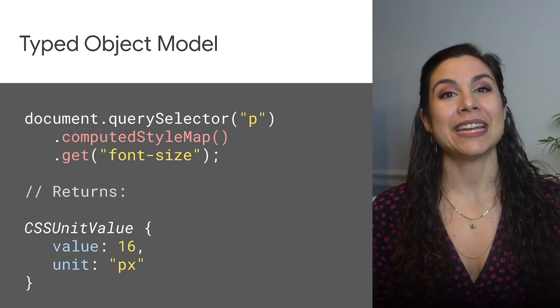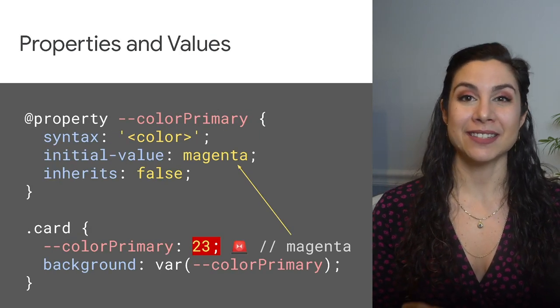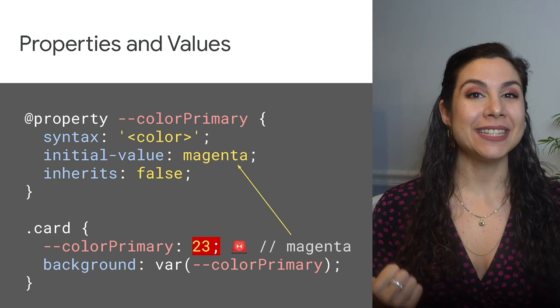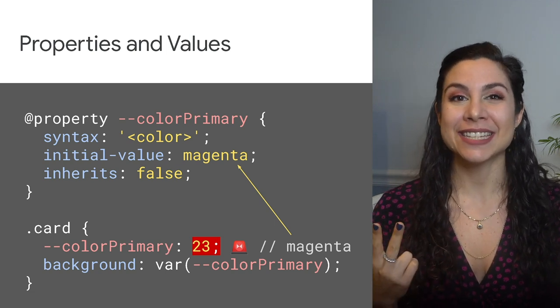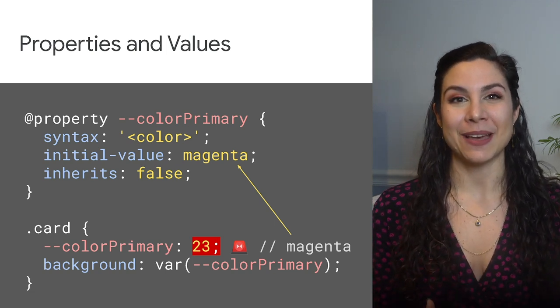And beyond worklets, Houdini enables more semantic CSS with the typed object model, and enables developers to define advanced CSS custom properties with syntax, default values, and inheritance through the Properties and Values API.